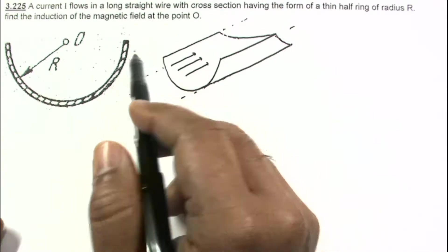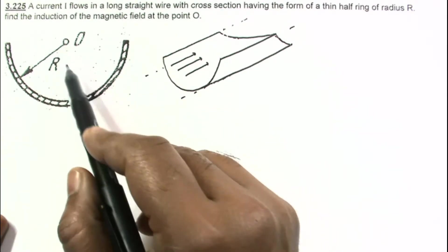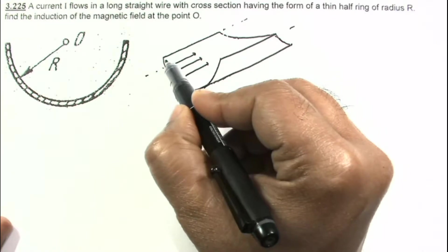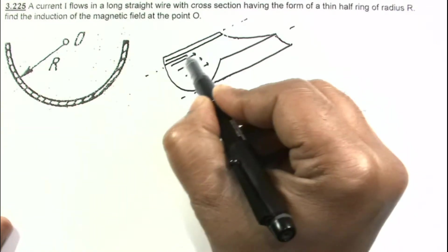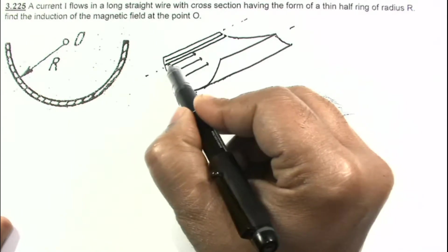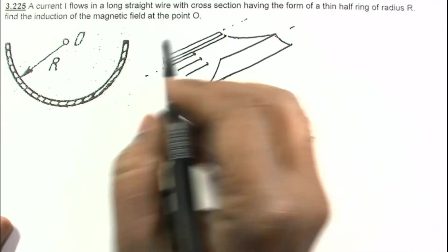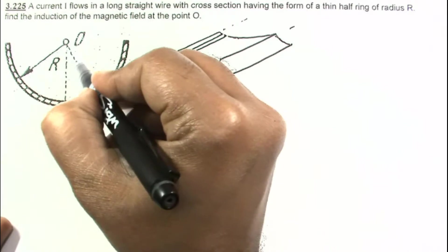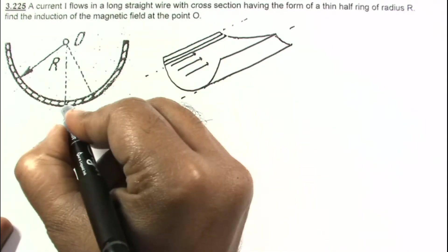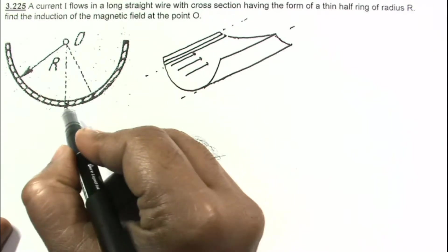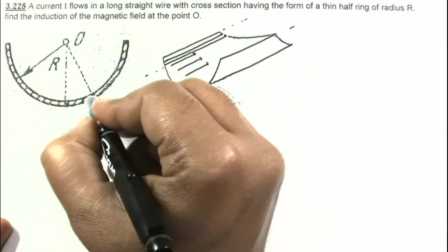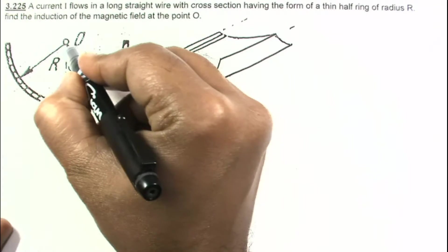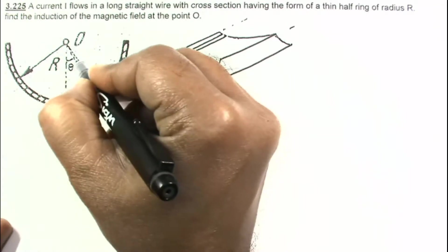For calculation of the magnetic field, we have to divide this half ring into small elemental wires — each acting as an infinite wire. Let us take an element at angle theta with a very small angular width d theta. I am assuming the current is flowing inwards, into the plane of the paper.